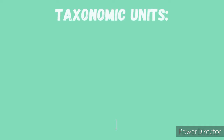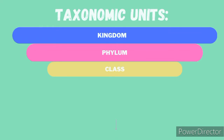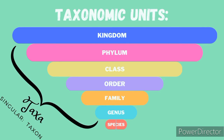A single one is a taxon. There are 7 taxonomic units, the largest one being kingdom, followed by phylum, class, order, family, genus, and lastly species, being the smallest one.